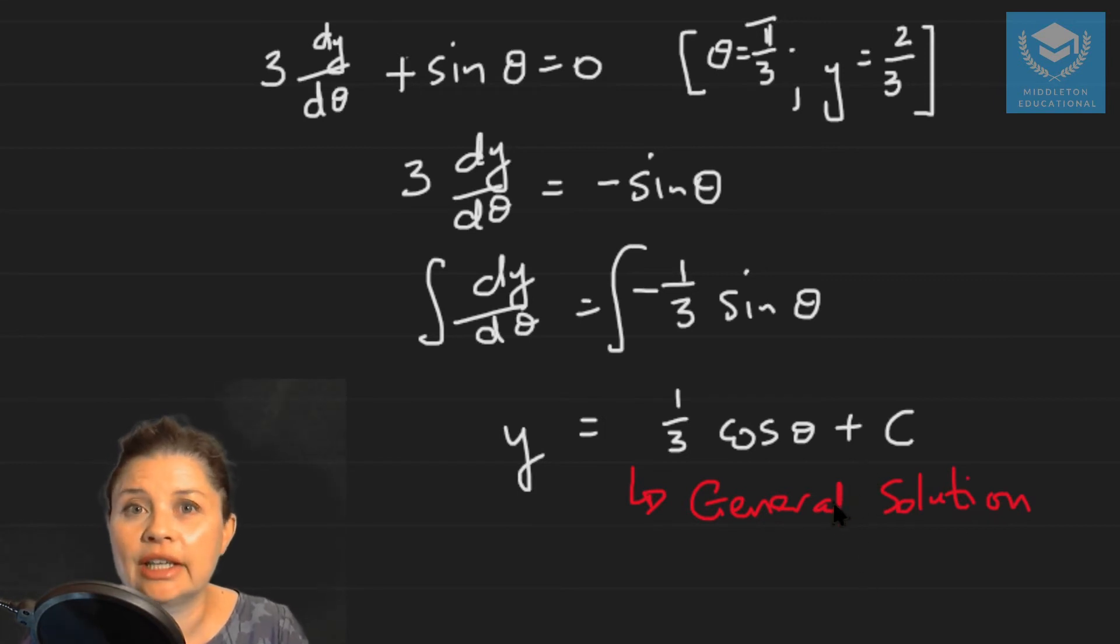And you can then find the particular solution if you are given an initial condition, which we are in this case here. So we know that when theta is pi over 3, our y value is going to be 2 over 3.